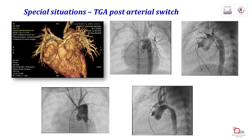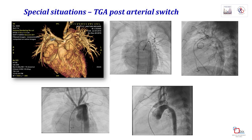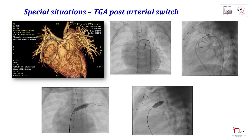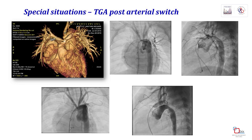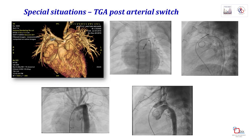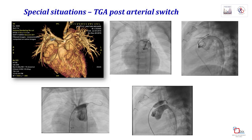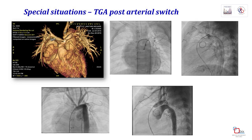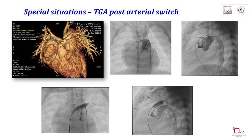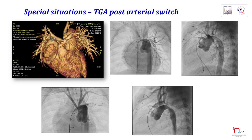The most serious issue in post-arterial switch is the possibility that the coronary artery may lie fairly close to a stenosed branch pulmonary artery. This patient has trifurcation stenosis which looks very complex, and the RCA is lying close to the LPA proximally. During balloon interrogation, the reduction in flow may not be very obvious, but this patient subsequently developed transient ischemic changes and was then referred for surgical repair of the complex PA stenosis.